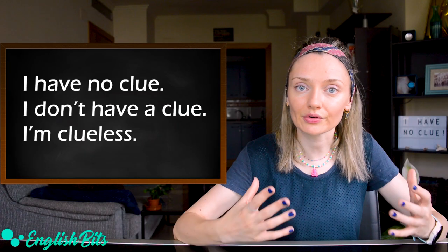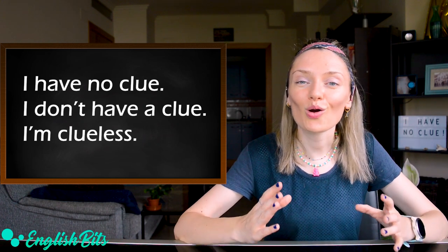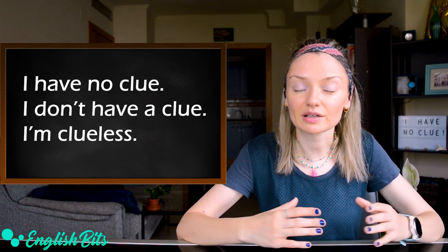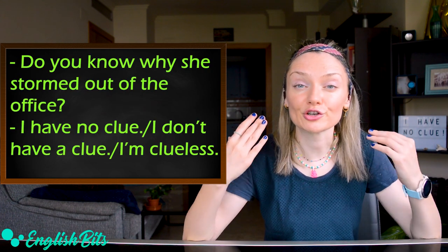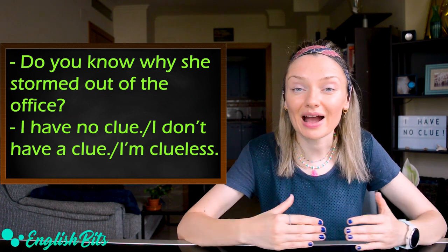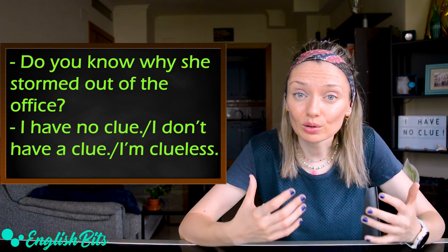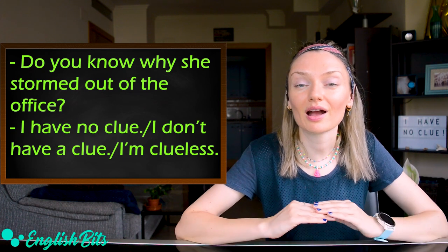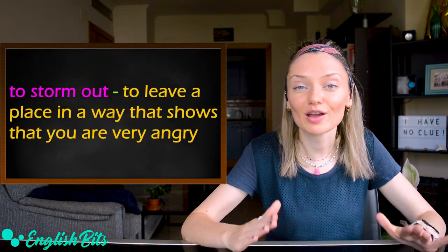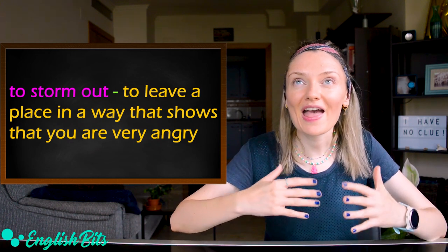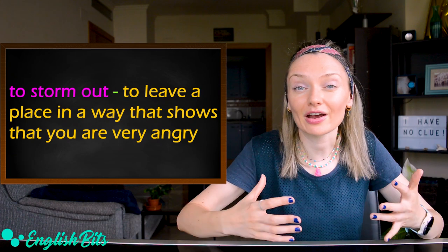Number three: I have no clue, or the second option I don't have a clue, or we can also say I'm clueless. An example sentence: Do you know why she stormed out of the office? I have no clue or I don't have a clue or the third option I'm clueless. To storm out means to leave a place in a way that shows that you're very angry.